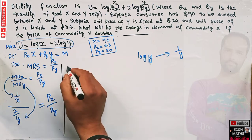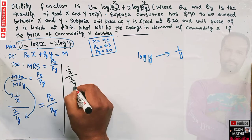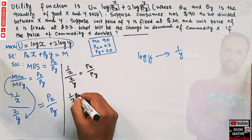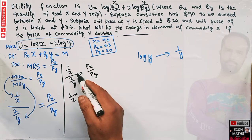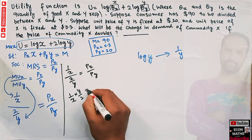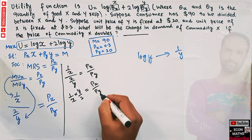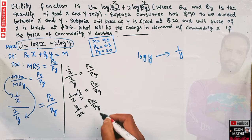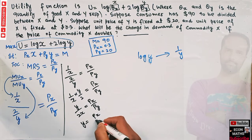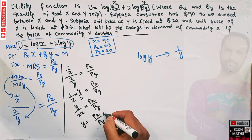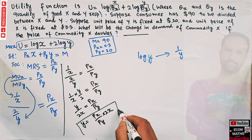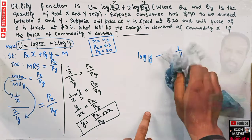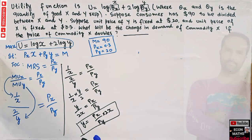We have (1/X) / (2/Y) = Px/Py, which simplifies to Y/(2X) = Px/Py. Solving for Y gives us Y = (Px/Py)·2X. This is the relationship between X and Y that we'll substitute into the budget constraint.